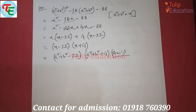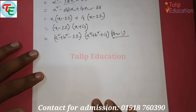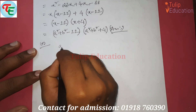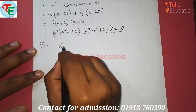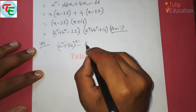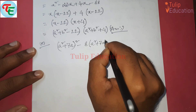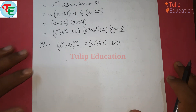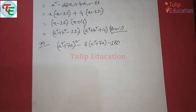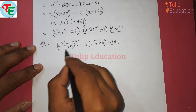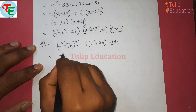Problems 29 and 30 are basically the same — no difference, exactly the same concept. Now problem 31: a squared plus 7a whole square minus 8 into a squared plus 7a minus 180. Here we take x, or let's say m, as the substitution. We won't take m as different.